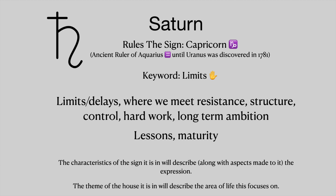Saturn rules the sign of Capricorn and was the ancient ruler of Aquarius until Uranus was discovered in 1781. The keyword is limits. This describes the limits and delays we meet in life, where we meet resistance, where we prefer structure and control, where we feel we need to work hard, long-term ambition, and lessons — lessons over time, with maturity coming from that.